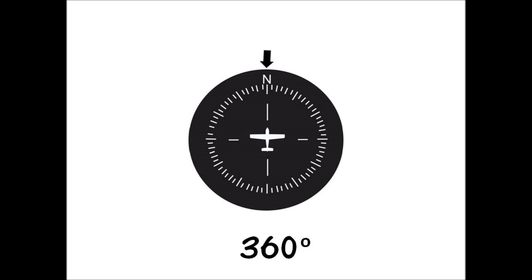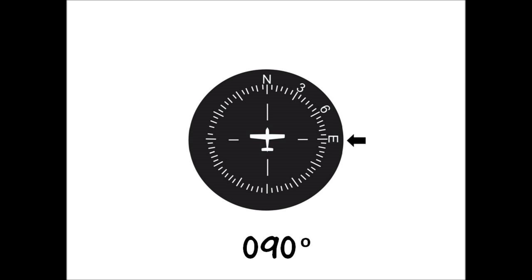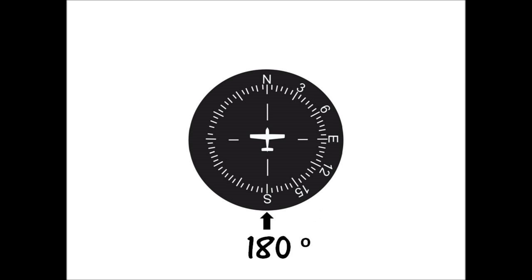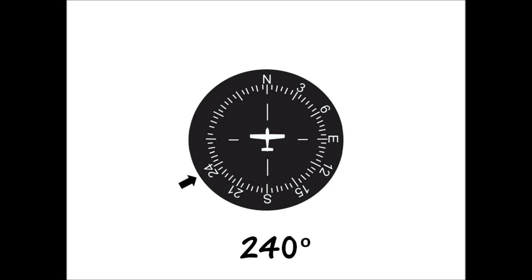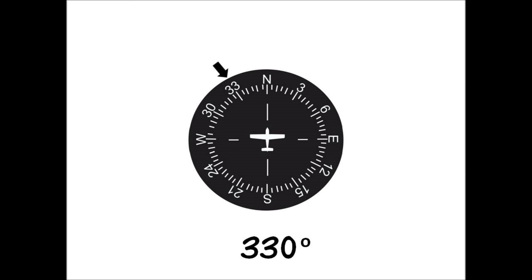Three six zero. Zero three zero. Zero six zero. Zero niner zero. One two zero. One five zero. One eight zero. Two one zero. Two four zero. Two seven zero. Three zero zero. Three three zero. Two zero.